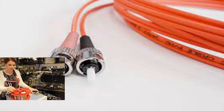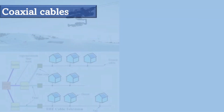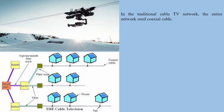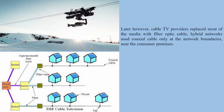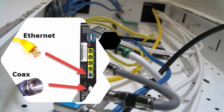Cable TV and cable internet networks also use coaxial cables. Later, cable TV providers replaced most of the media with fiber optic cable, and hybrid networks use coaxial cable only at the network boundaries near consumer premises. Another common application of coaxial cable is in traditional ethernet LANs. Because of its high bandwidth and consequently high data rates, coaxial cable was chosen for digital transmission in early ethernet LANs.